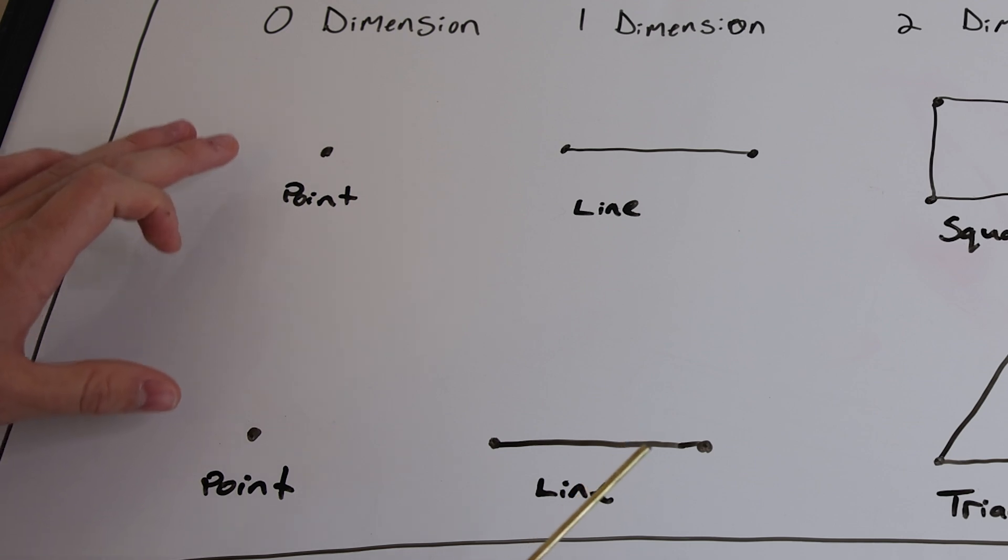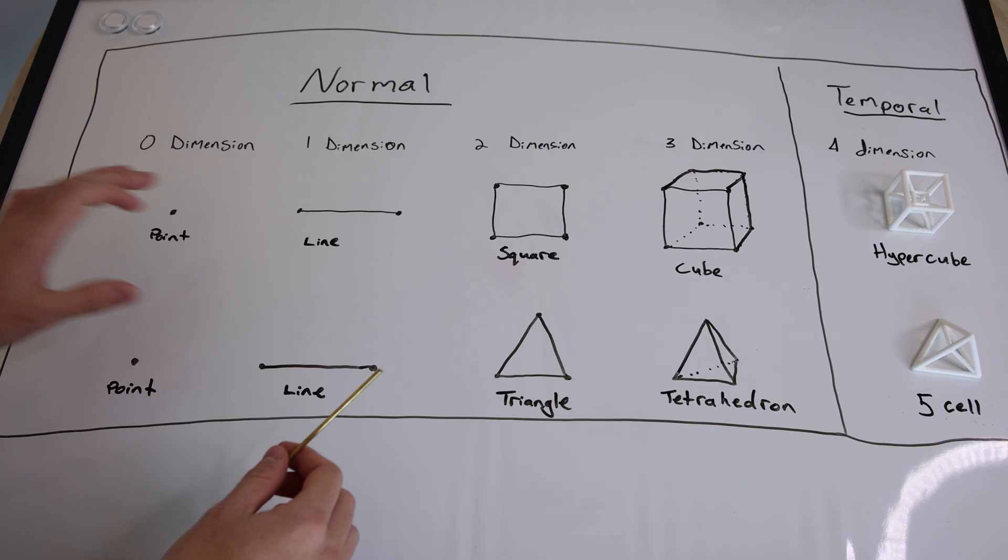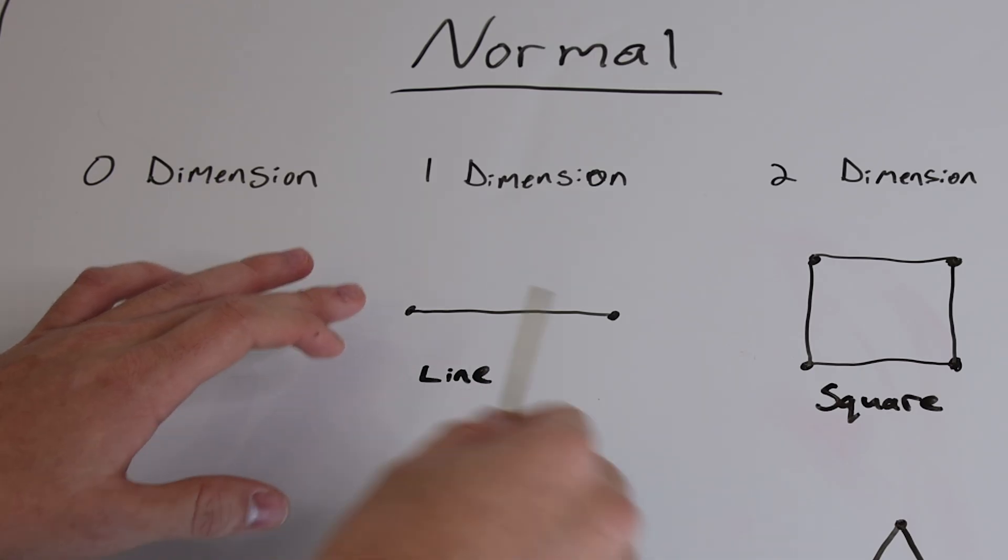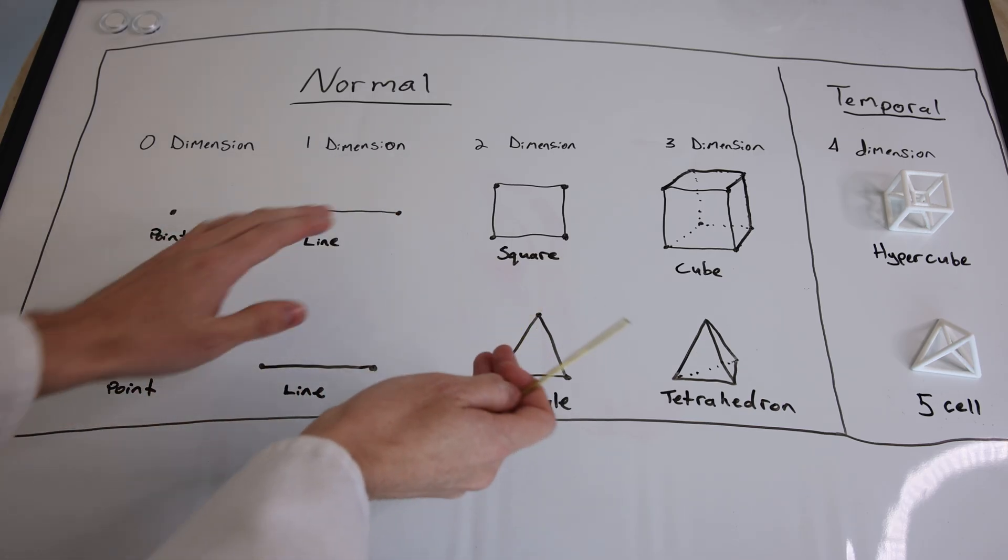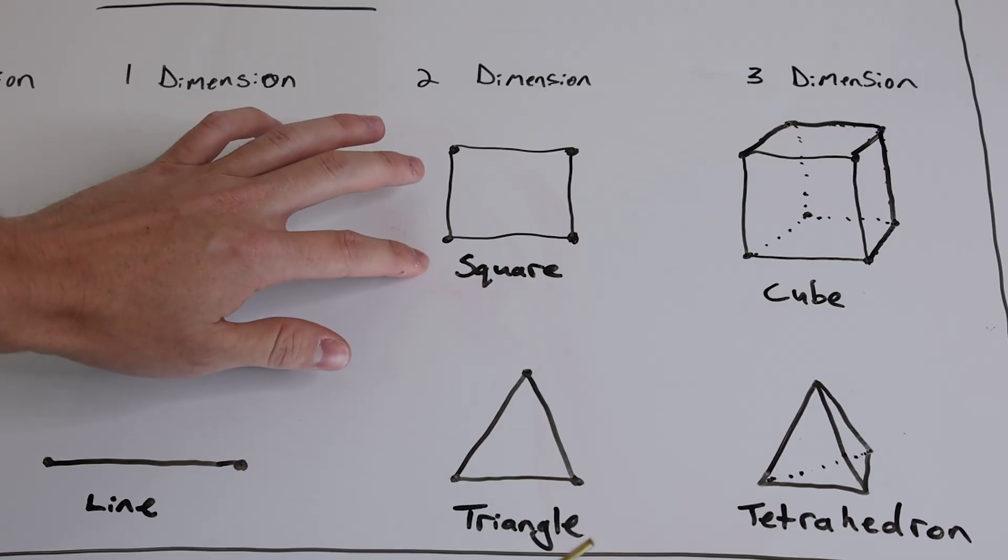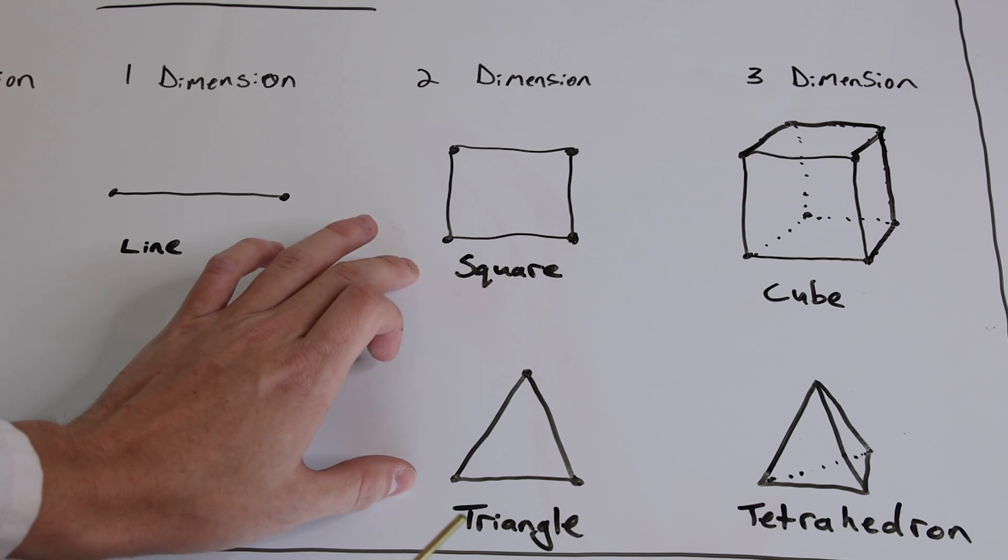In zero dimension both shapes will look like a single point. In one dimension we have a line, and that's just one dimension, so it makes sense. In two dimensions we have now an x and a y, and so we have a square and a triangle.